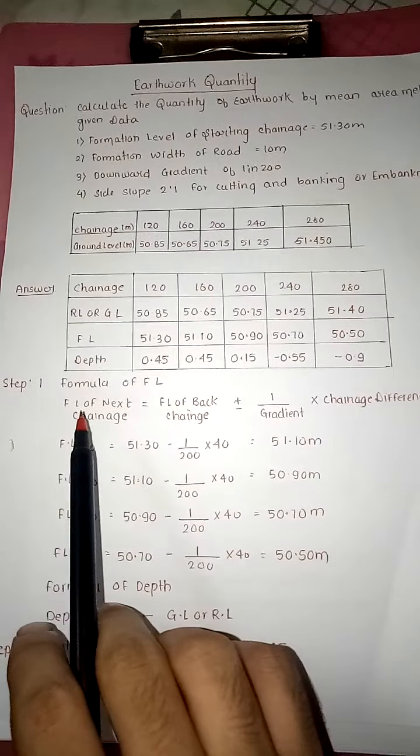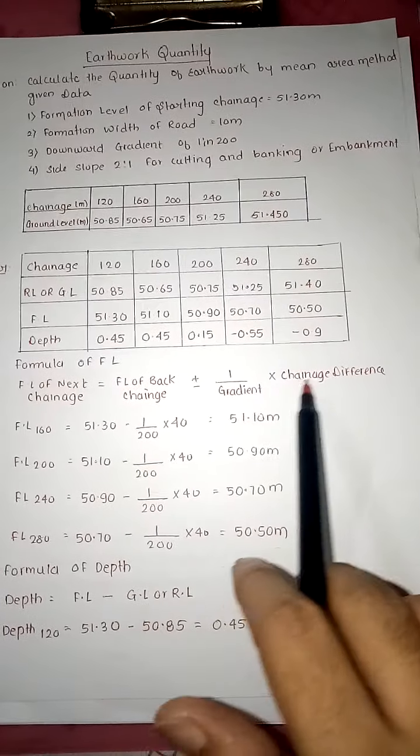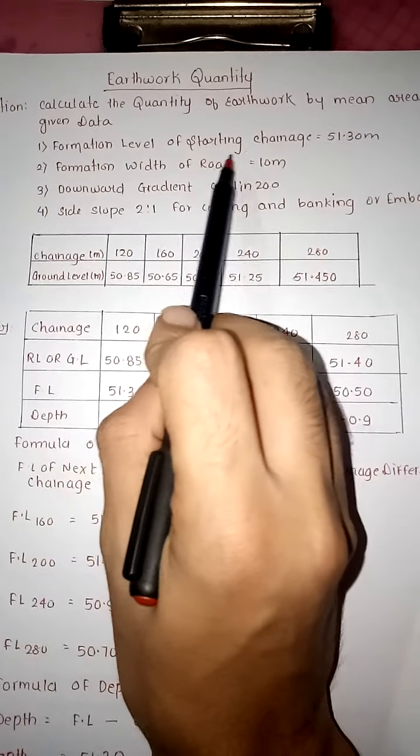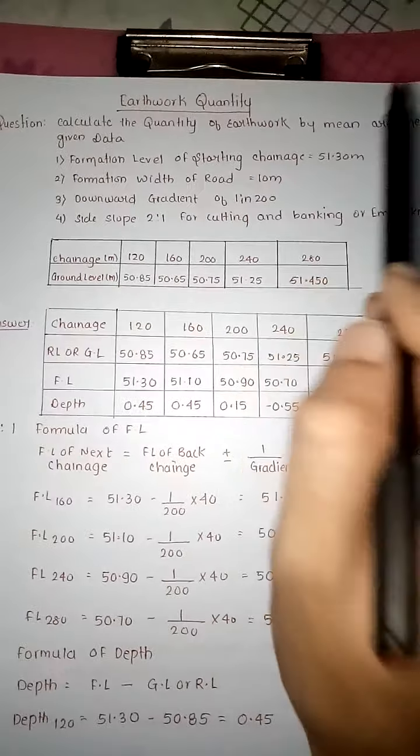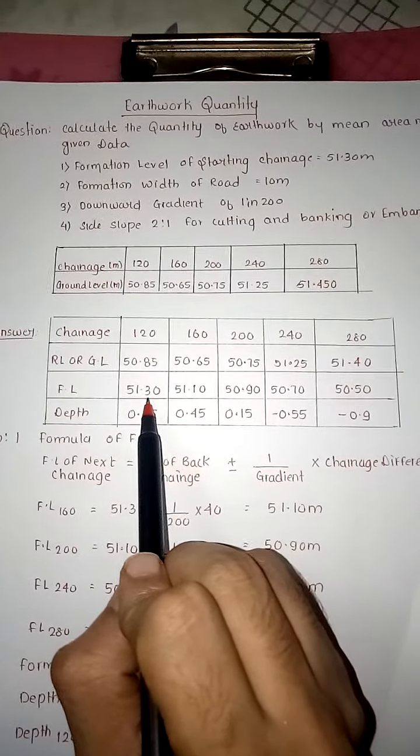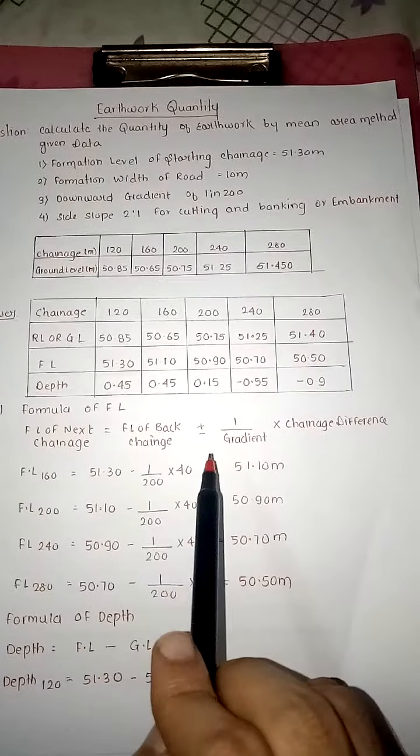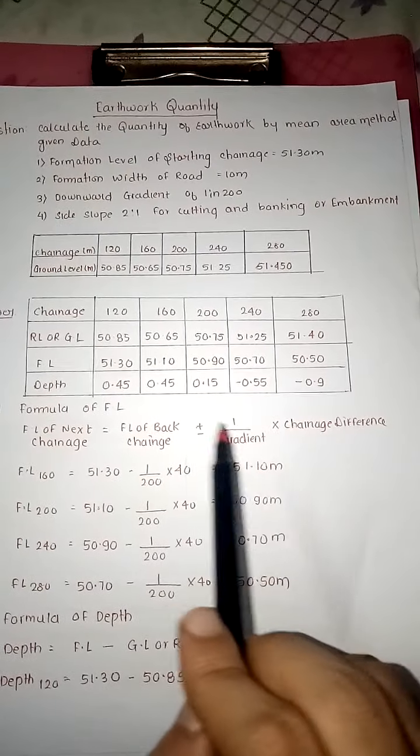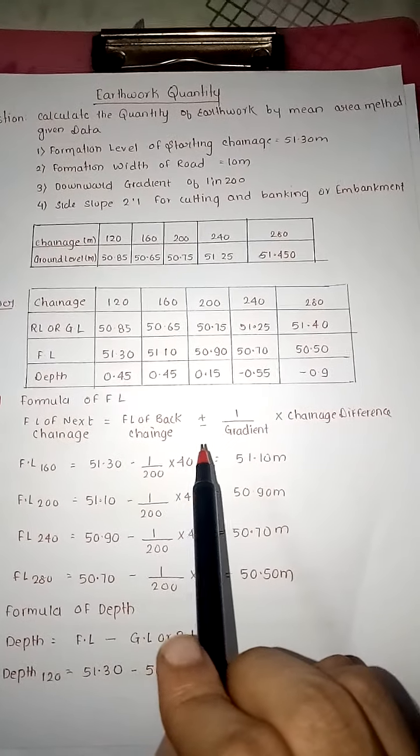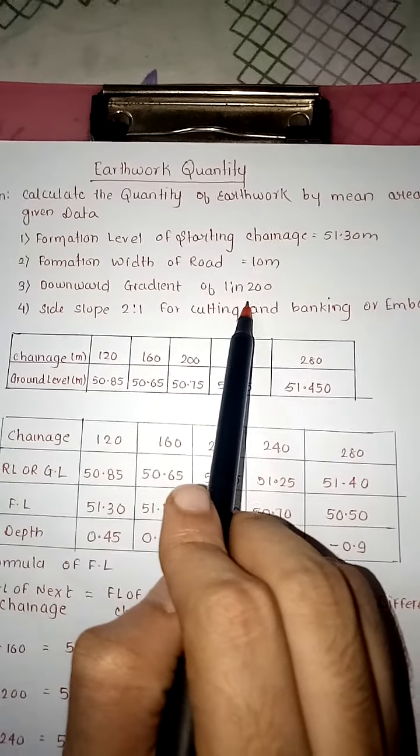How to find out FL? If you remember the right plan, the formula to find out FL: FL of back chainage plus or minus 1 upon gradient times change in chainage. Plus or minus: if upward gradient then positive, downward gradient then minus. Question says downward gradient of 1 in 200.